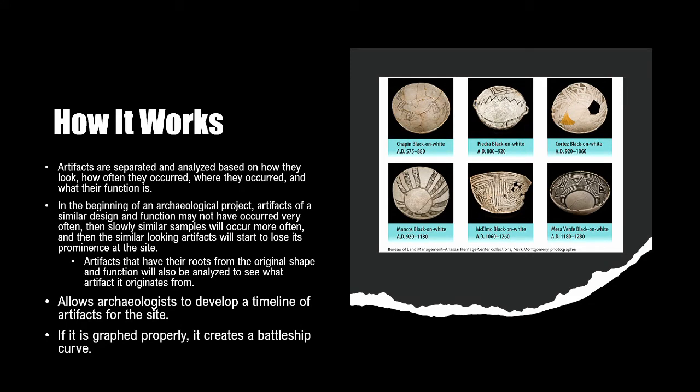How it works is that artifacts are separated and analyzed based on how they look, how often they occurred, where they occurred, and what their function is. In the beginning of an archaeological project, artifacts of a similar design and function may not have occurred very often. Then slowly, archaeologists will notice that these samples will start to occur more and more often as they go through the dig, and then as the dig is finishing up, they'll notice that these artifacts will lose their prominence at the site.